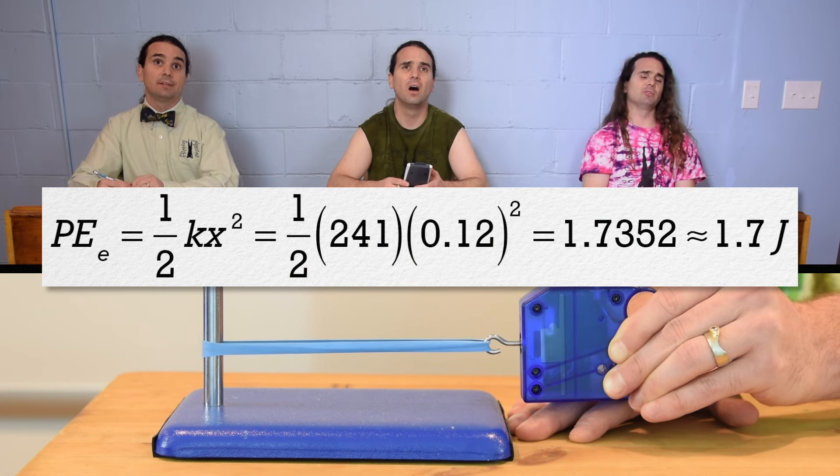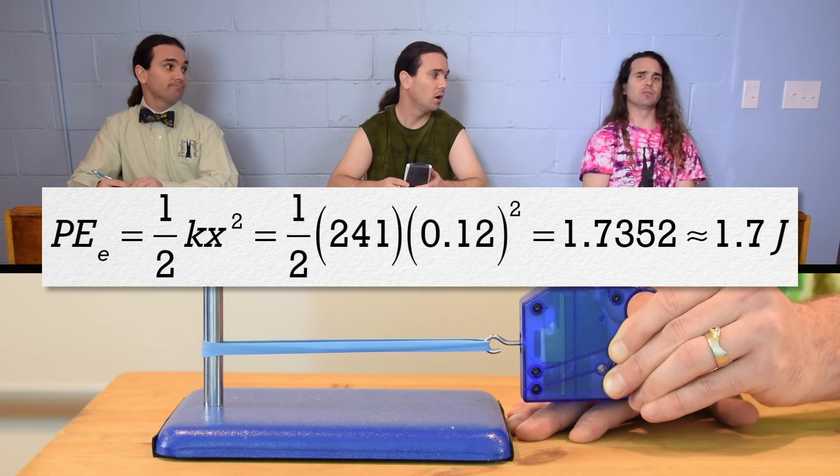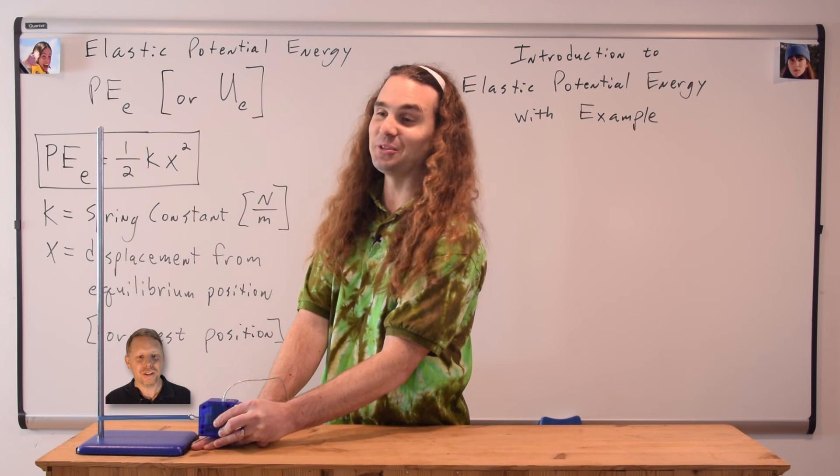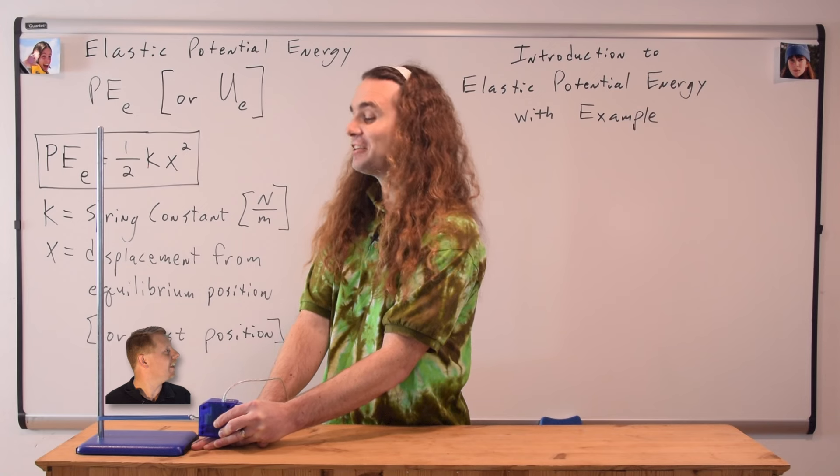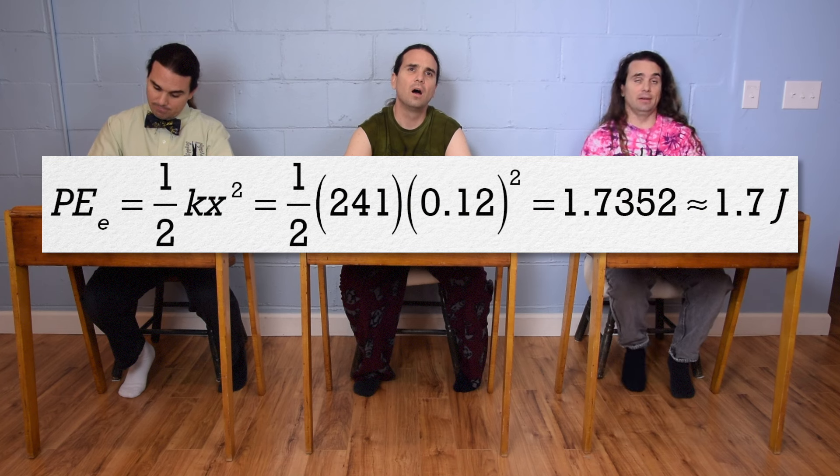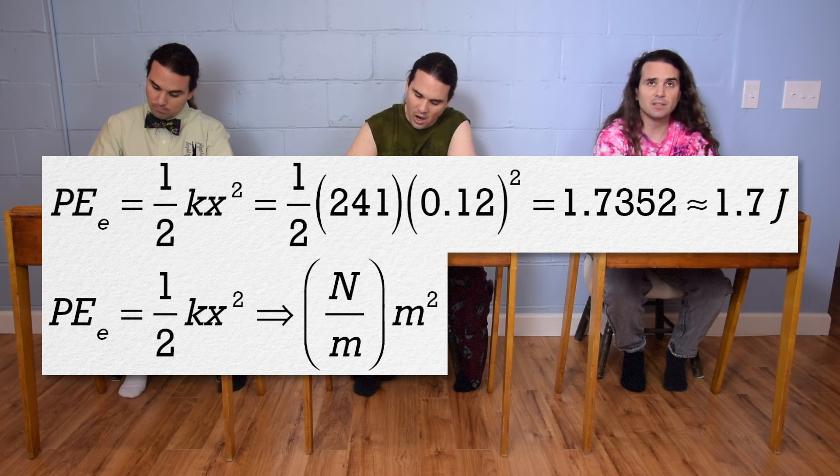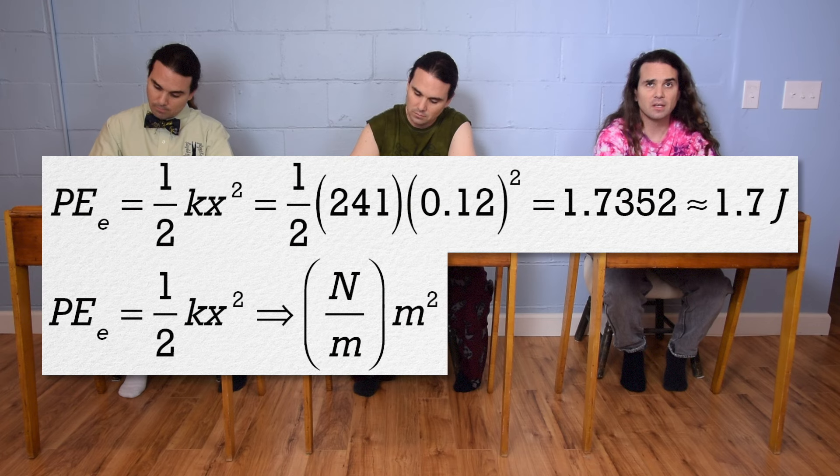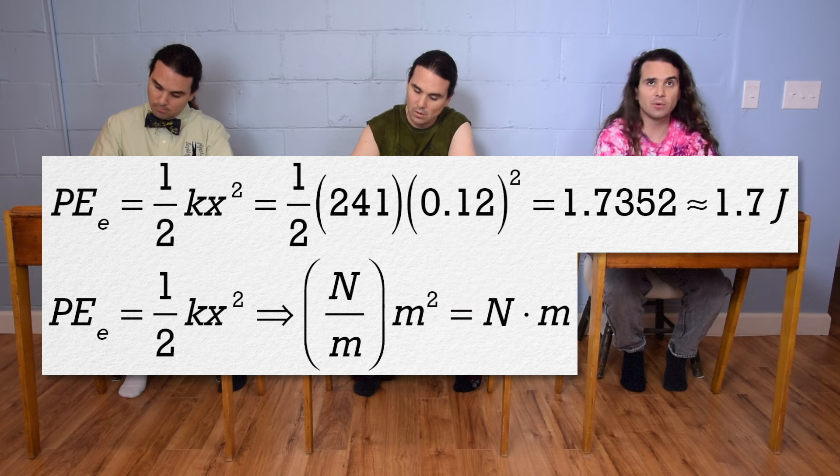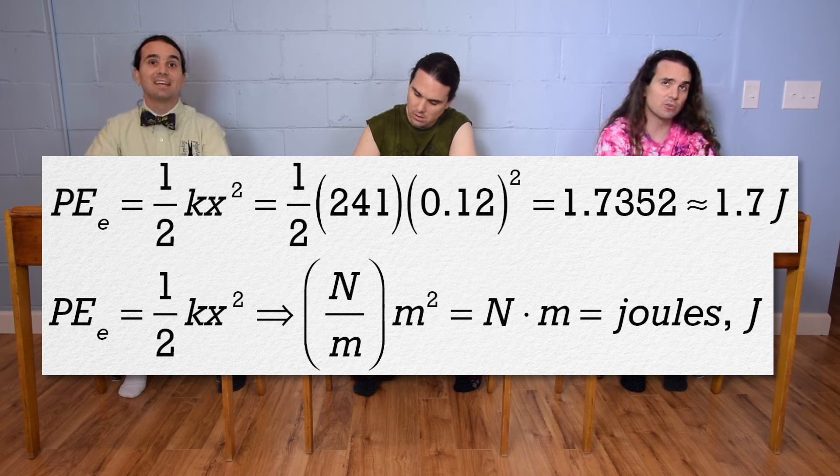Joules! I bet we have to actually determine the units. Yes! Absolutely! Jinx, you owe me a soda. Yeah. Okay. Well, the spring constant is in newtons per meter, which is multiplied by meters squared. Meters cancel out and we are left with newton meters, which is joules. So the energy stored in the spring is 1.7 joules.